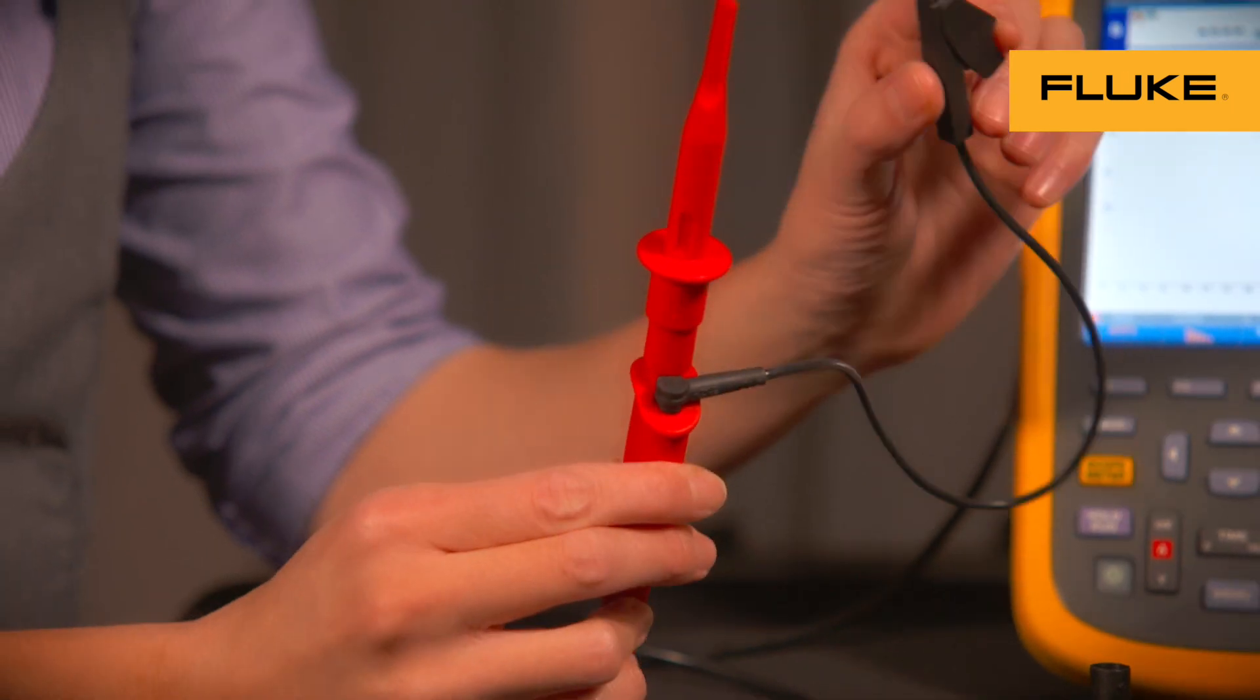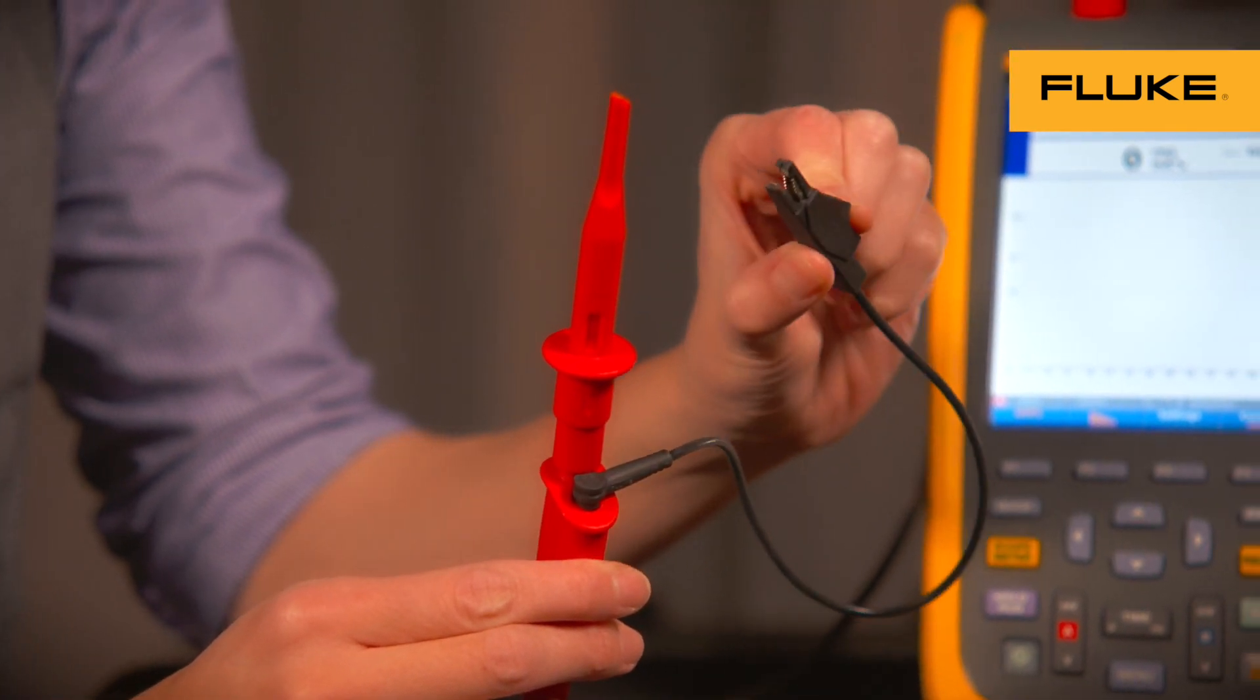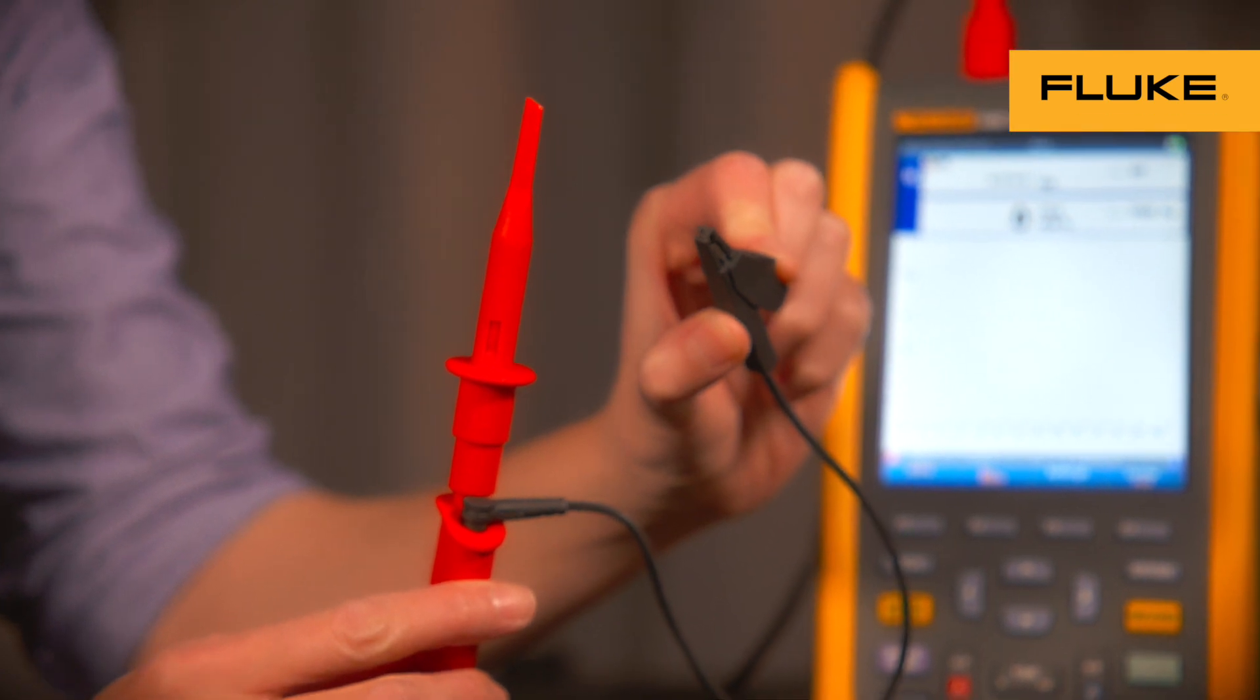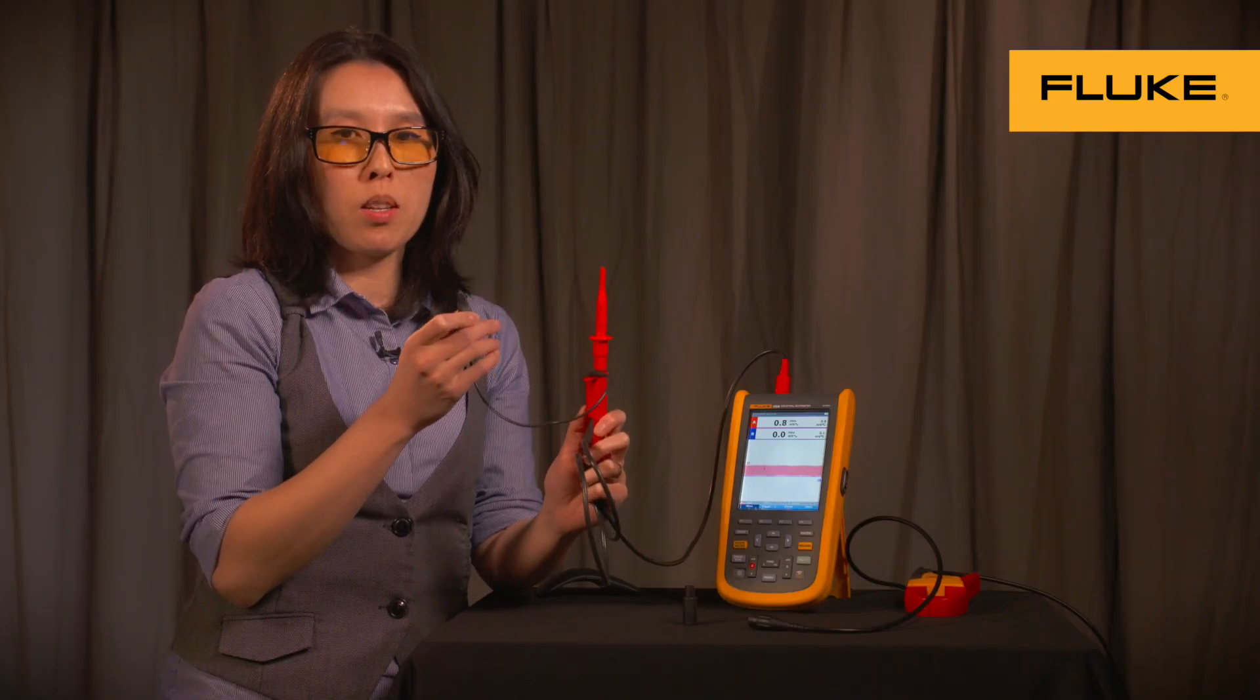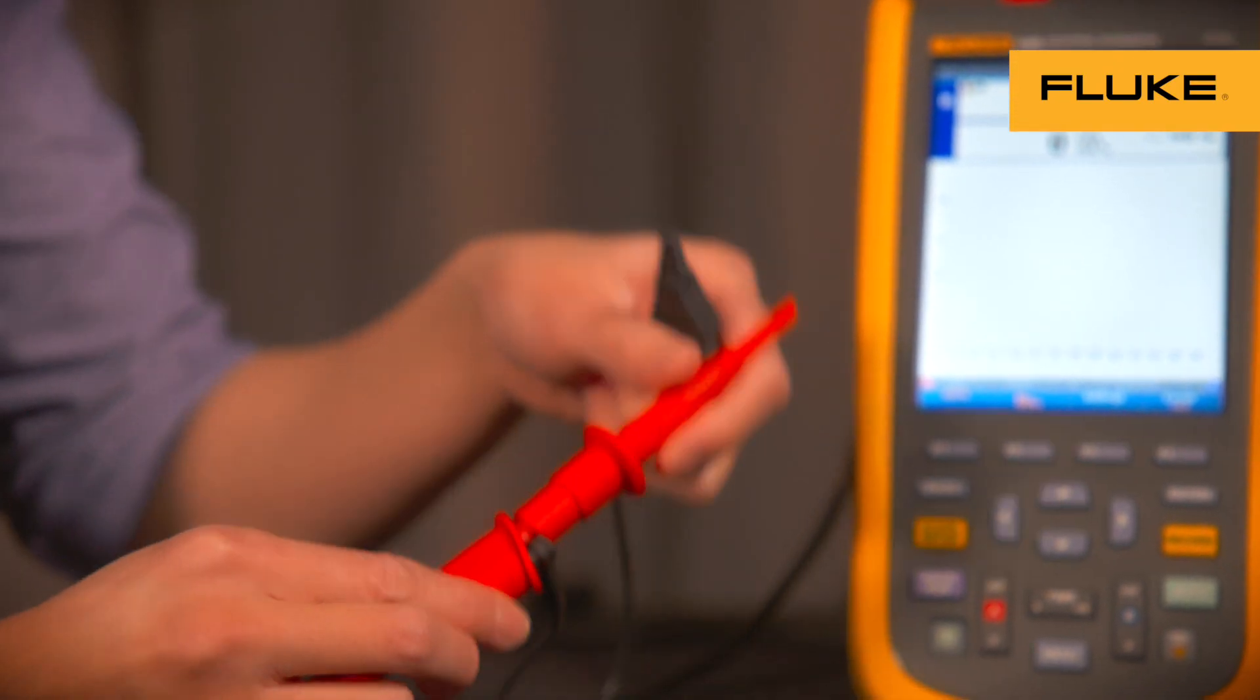This is a shielded test lead, the STL120. It comes standard, two of them, a blue and a red one, with any 120B series kit. This will measure our voltage.